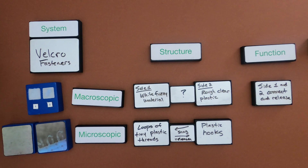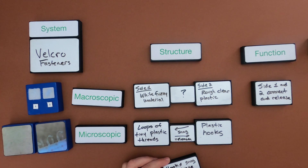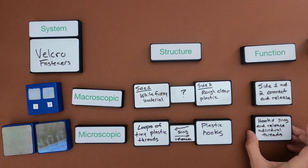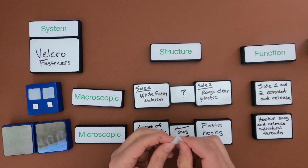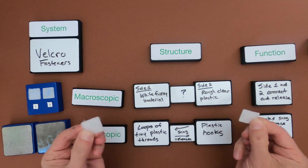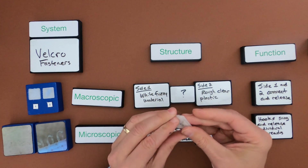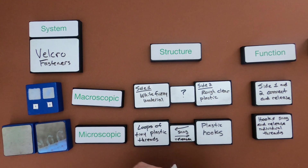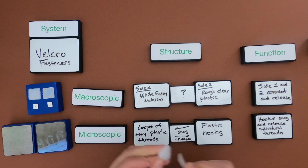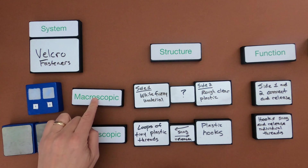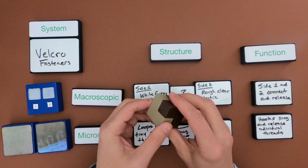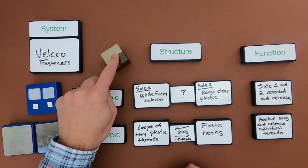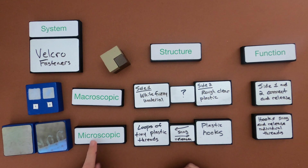Microscopically, the hooks snag and release individual threads. By looking at it microscopically, I now know how Velcro works. When attached, there are probably hundreds of hooks connecting with those thread-like plastic loops, and when pulled apart, they release. Changing scale from macroscopic to microscopic allows me to see what's going on with the structure. If something doesn't make sense at the macroscopic level, you have to go to the microscopic.